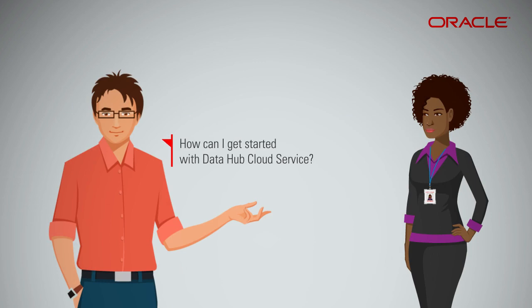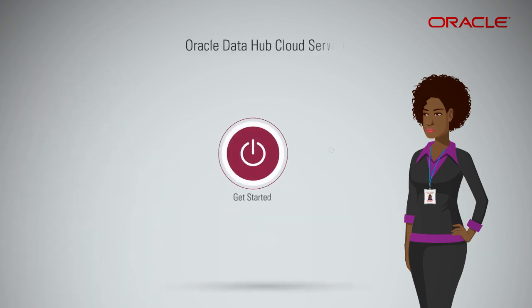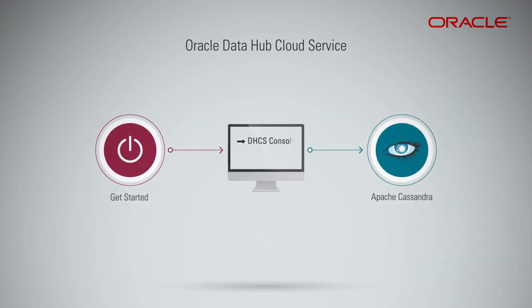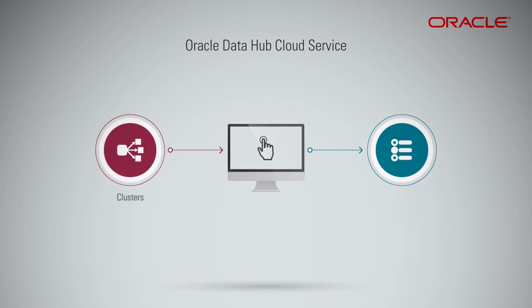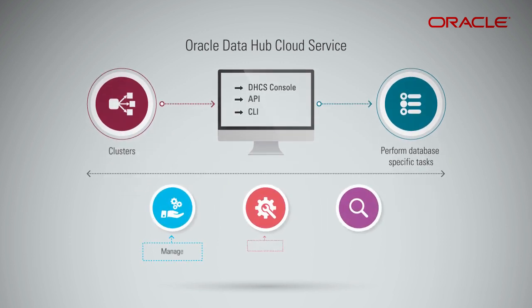How can I get started with Data Hub Cloud Service? You can easily get started by creating the Apache Cassandra cluster using the Oracle DHCS console or CLI. Once you have created the clusters, you can use Cassandra's native tools such as CQLSH to connect to the Apache Cassandra database cluster and perform database-specific tasks. The DHCS console, API, or CLI interface allows you to easily manage, administer, and monitor your clusters.